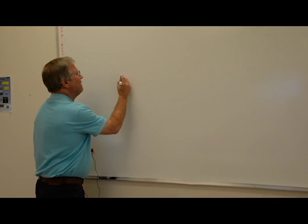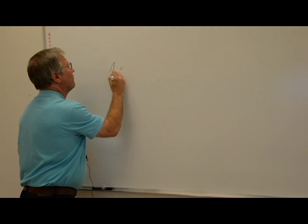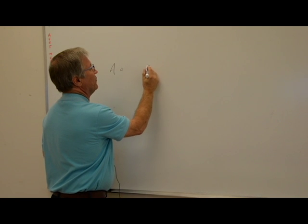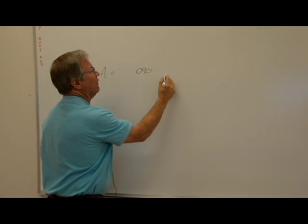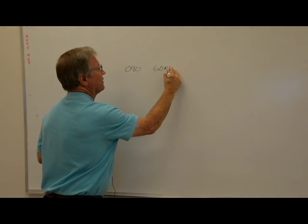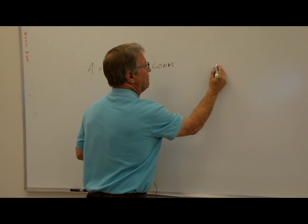One of those basics has to do with what does one degree equal. We know if we start at point A and we fly a heading of 090 for 60 nautical miles, we'll end up at point B.